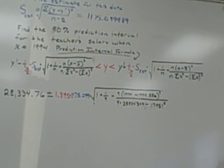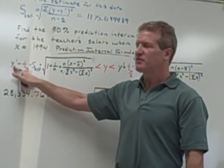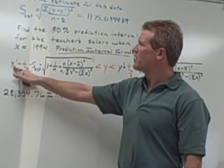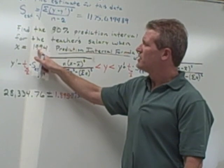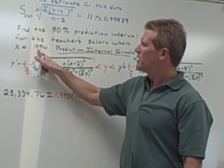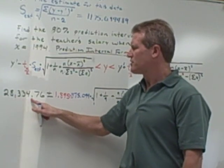So what I'm going to do is when X is 1994, I need to find my Y prime, my predicted salary. Well, I found that earlier by plugging 1994 into my regression equation. And when I did that earlier on the last video, I got $28,334.76.